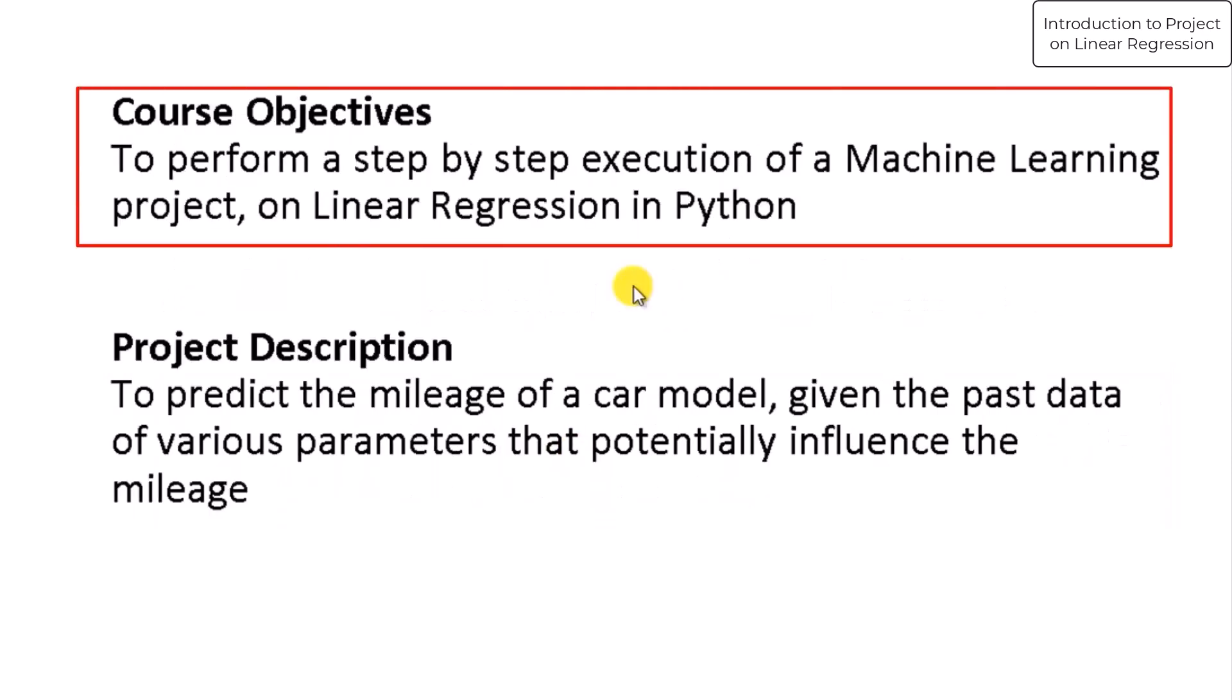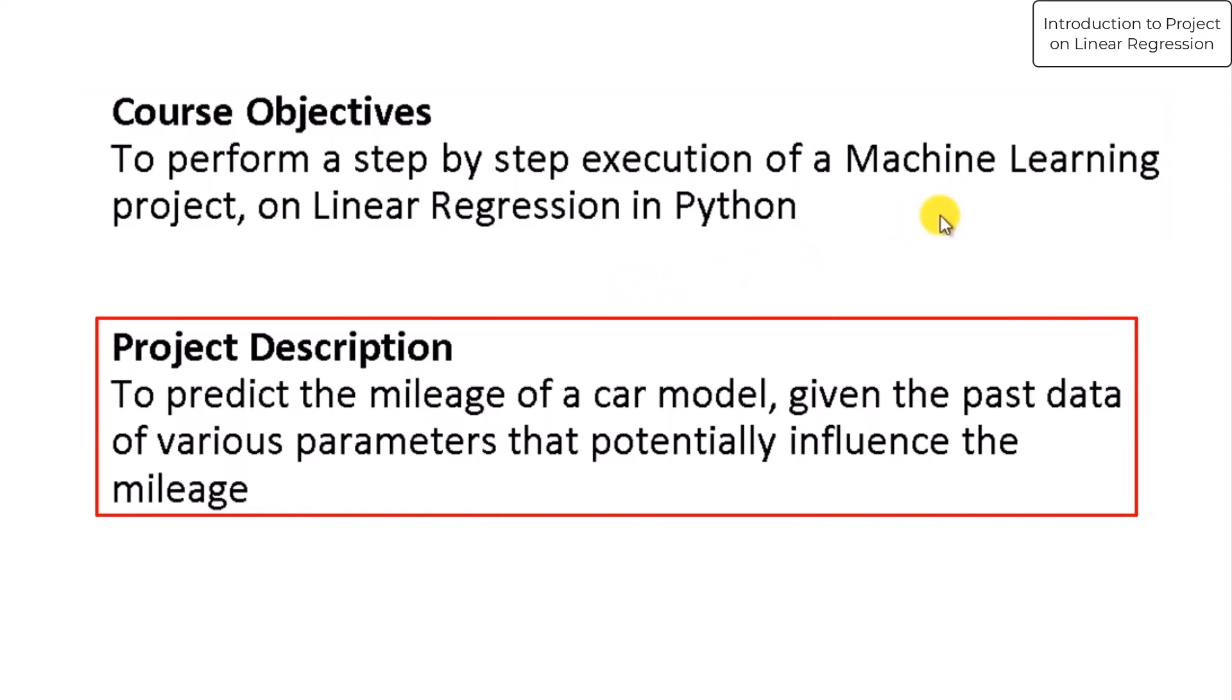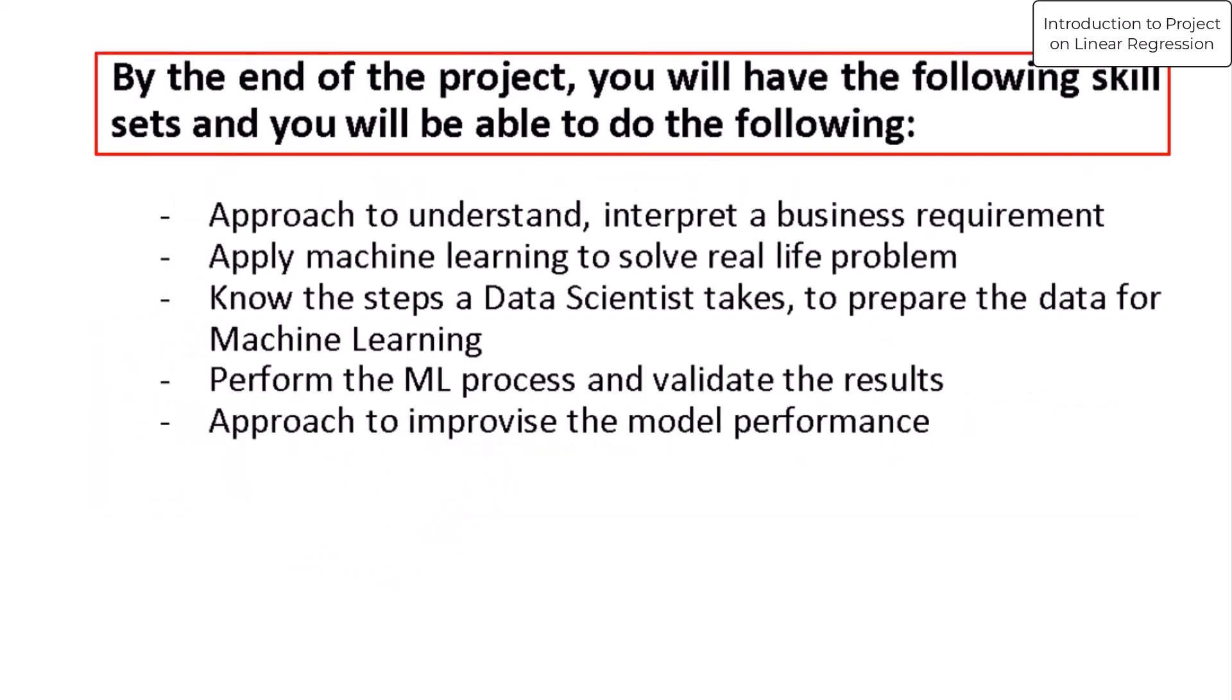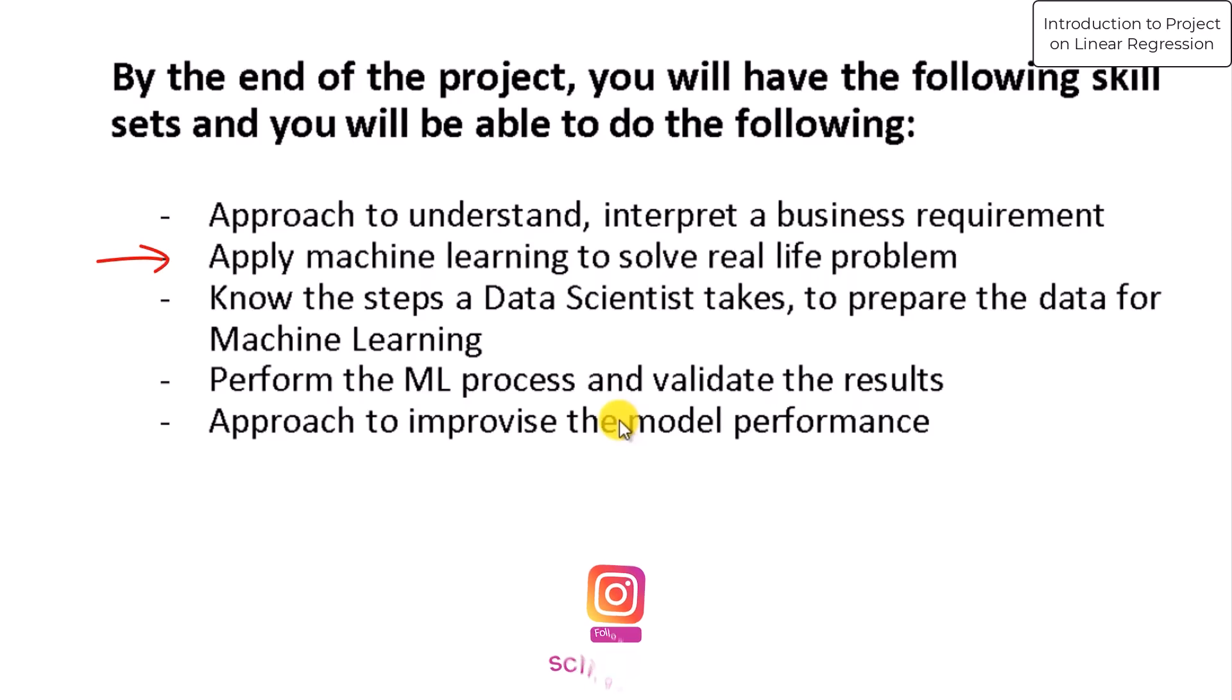The objective of this discussion is to execute a machine learning project on linear regression to solve a real-life problem. We shall predict the mileage of a car model using historical data. By the end of this project, you will have learned how to understand and interpret a business requirement, apply machine learning to solve real-life problems, know how to prepare the data, perform the machine learning process and validate the results, and approach to improvise the model performance.